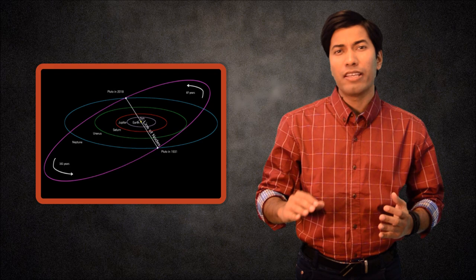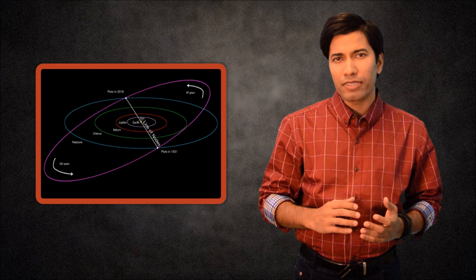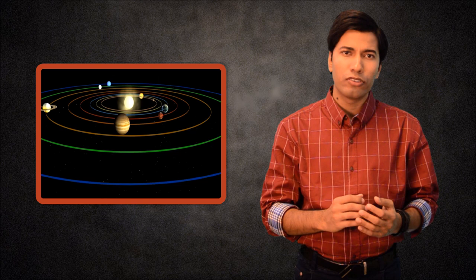Firstly, all these 8 planets can never line up in 3 dimensions because their orbital planes are slightly different from each other. So, let's reduce the problem to 2 dimensions and ask whether all these planets can have the same heliocentric longitude?